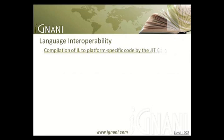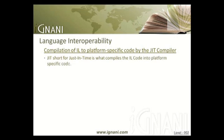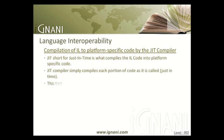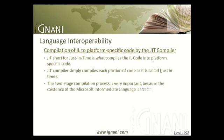The second stage is compilation of IL to platform-specific code by the JIT compiler in the CLR. JIT, short for just-in-time, compiles the IL code into platform-specific code. Instead of compiling the entire application at once, the JIT compiler compiles each portion of code as it is called, just-in-time. This two-stage compilation process is very important because the existence of the Microsoft Intermediate Language is the key to providing many of the benefits of .NET.